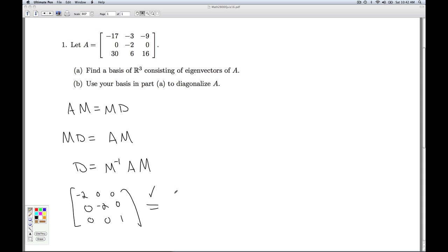is in fact equal to M inverse, which was the matrix we had. M is the matrix formed by the eigenvectors. Times our original matrix A times that matrix M again. So that's how we've diagonalized the matrix A.